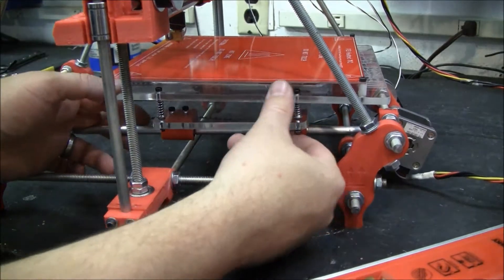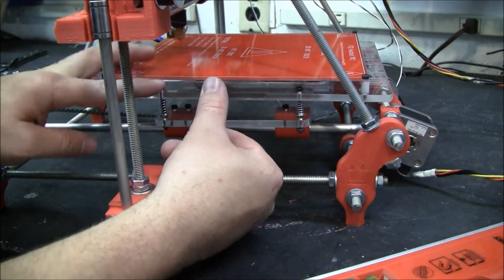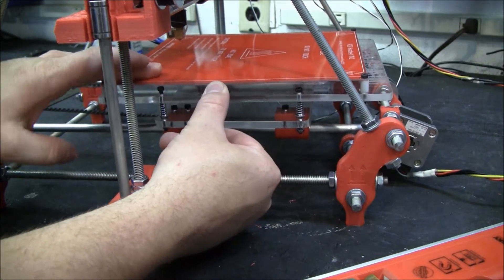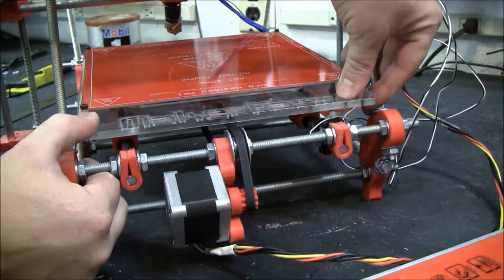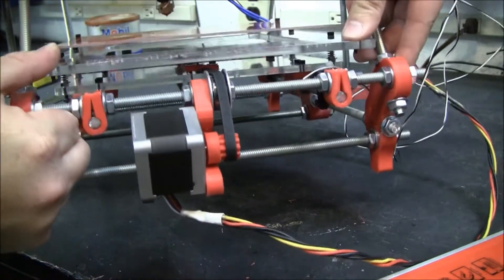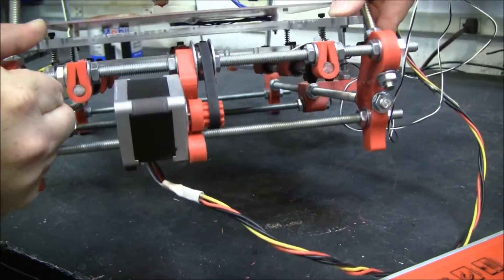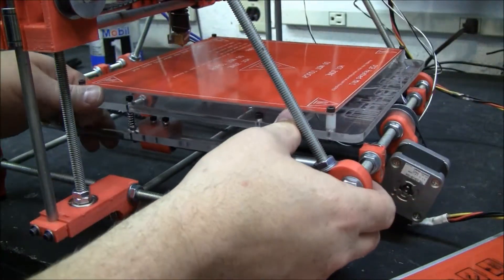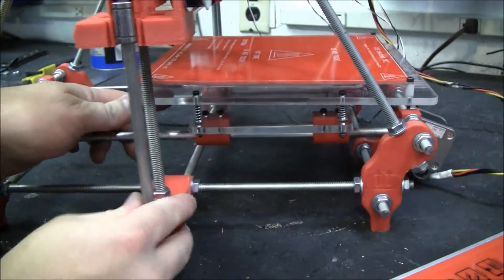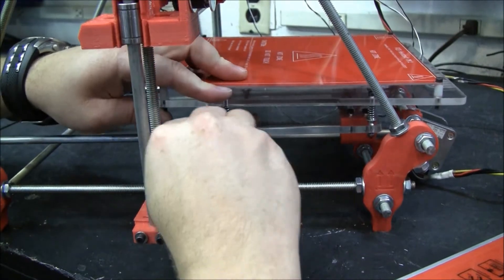When I put this on, I should have compressed these springs a lot more because it takes a lot longer to compress them now. What they say is you go ahead and compress them down till this plate is about two millimeters from the fender washer. So they're going to be most of the way compressed. They're going to be a lot stronger when they're that compressed, so I'm going to start tightening them down.